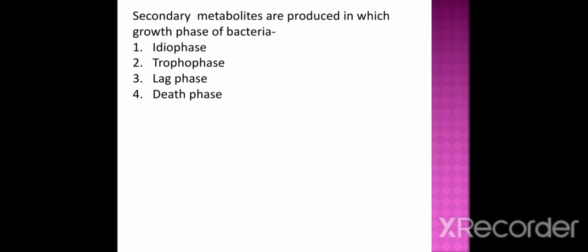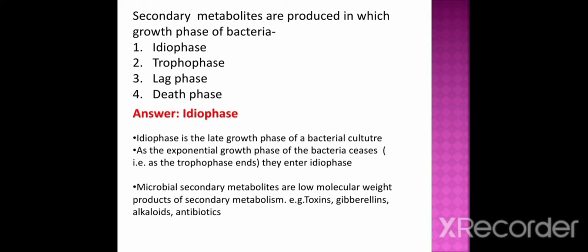The next question is: secondary metabolites are produced in which growth phase of bacteria? Option 1 idiophase, option 2 trophophase, option 3 lag phase, option 4 death phase. The correct option is idiophase. Idiophase is the late growth phase of bacterial culture. As the exponential growth phase of bacteria ceases, i.e. as the trophophase ends, they enter the idiophase. The microbial secondary metabolites are low molecular weight products of secondary metabolism, e.g. toxins, gibberellins, alkaloids, antibiotics.